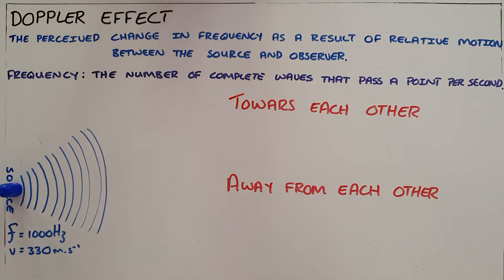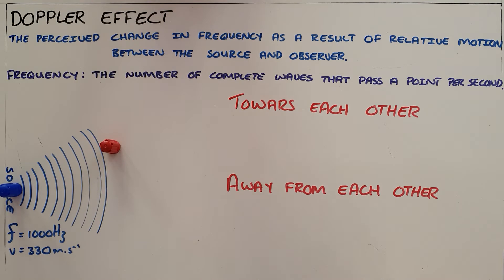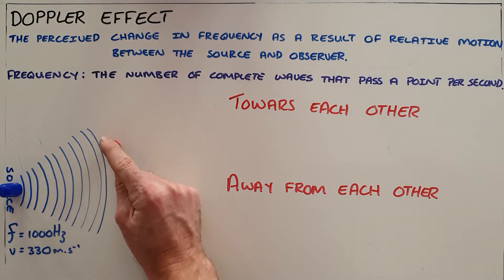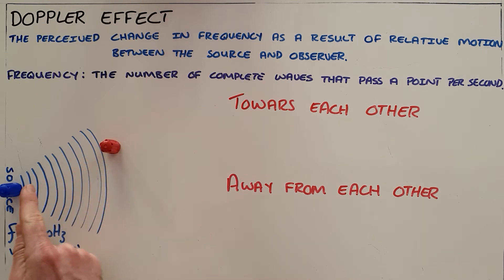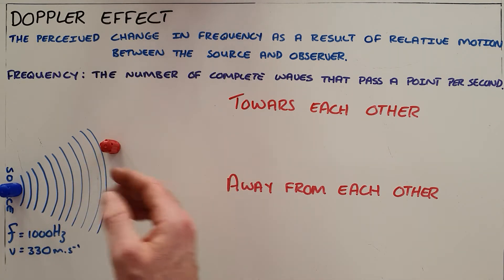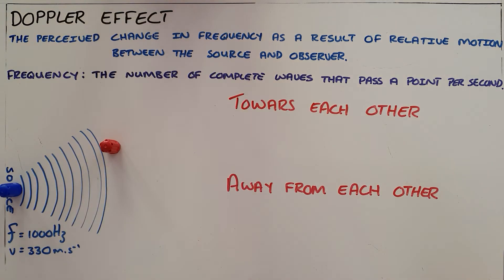If we place an observer within that range, we know that observer, while remaining stationary, is going to experience 1000 waves per second and as a result experience exactly the frequency that the source is emitting.